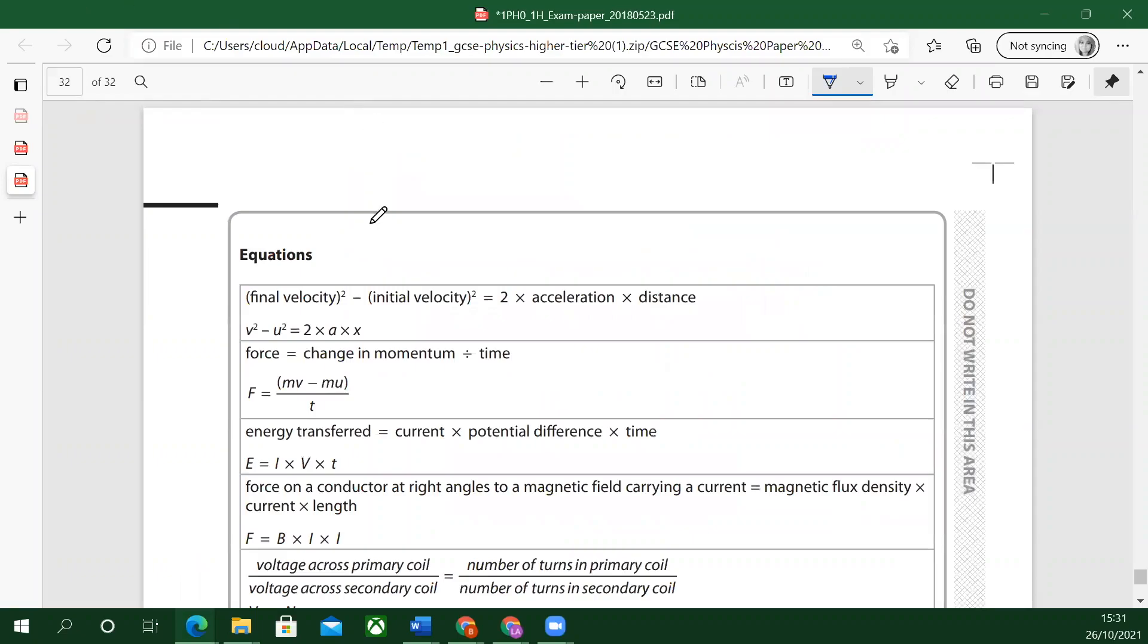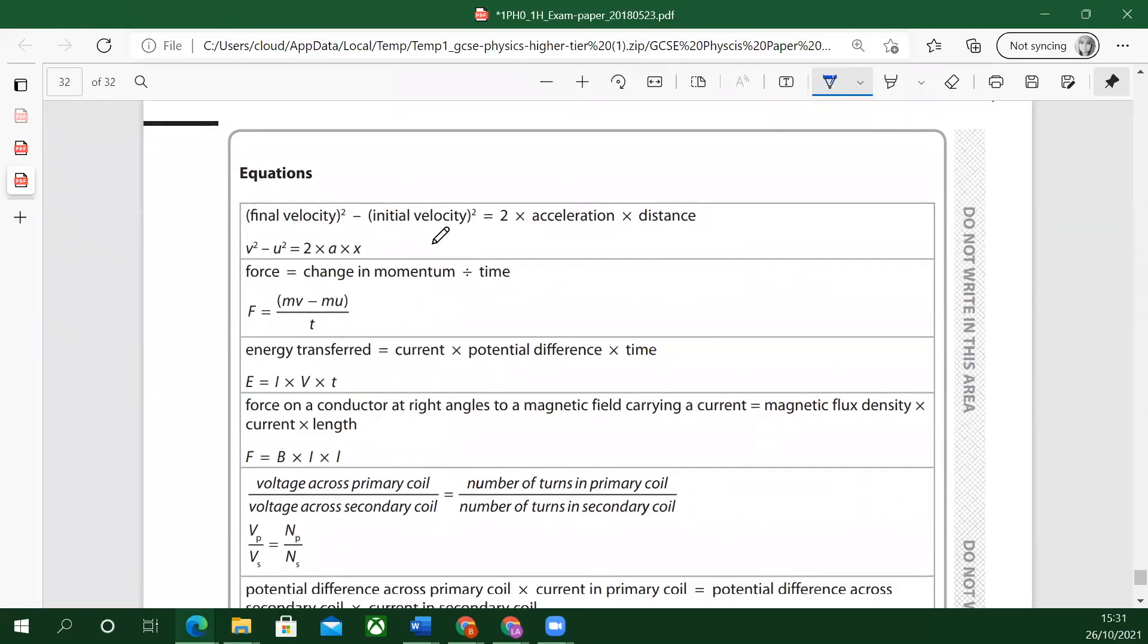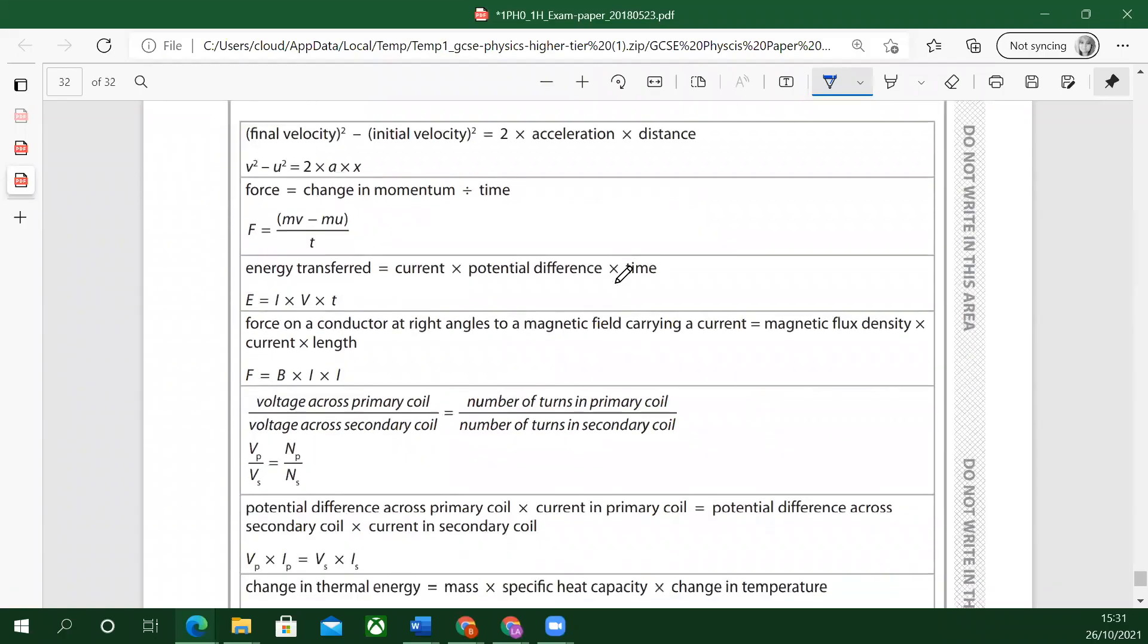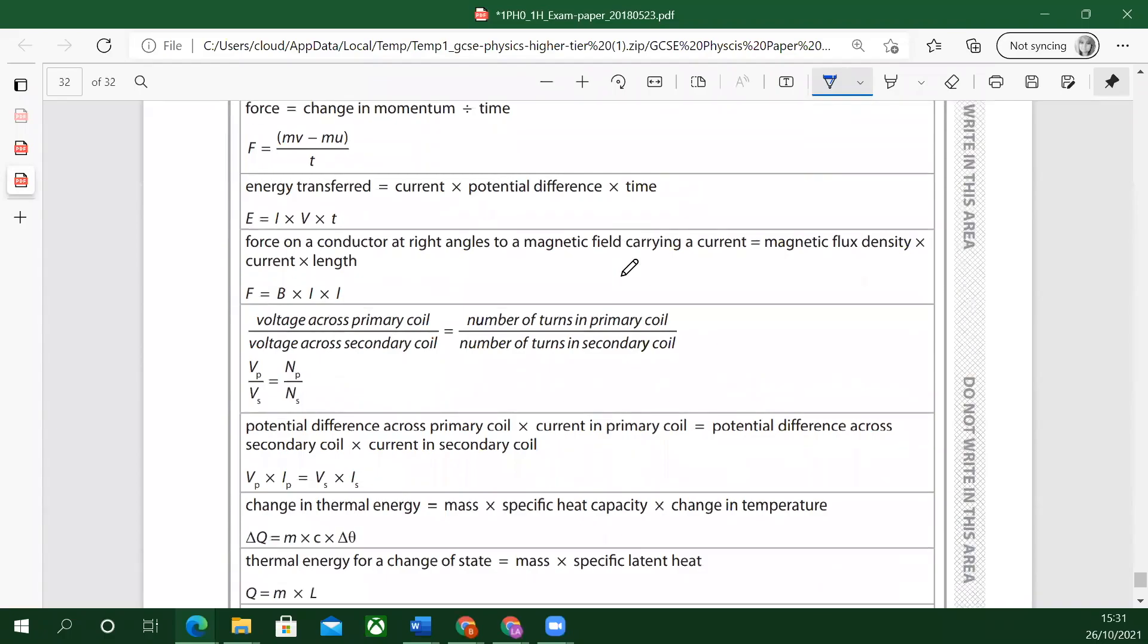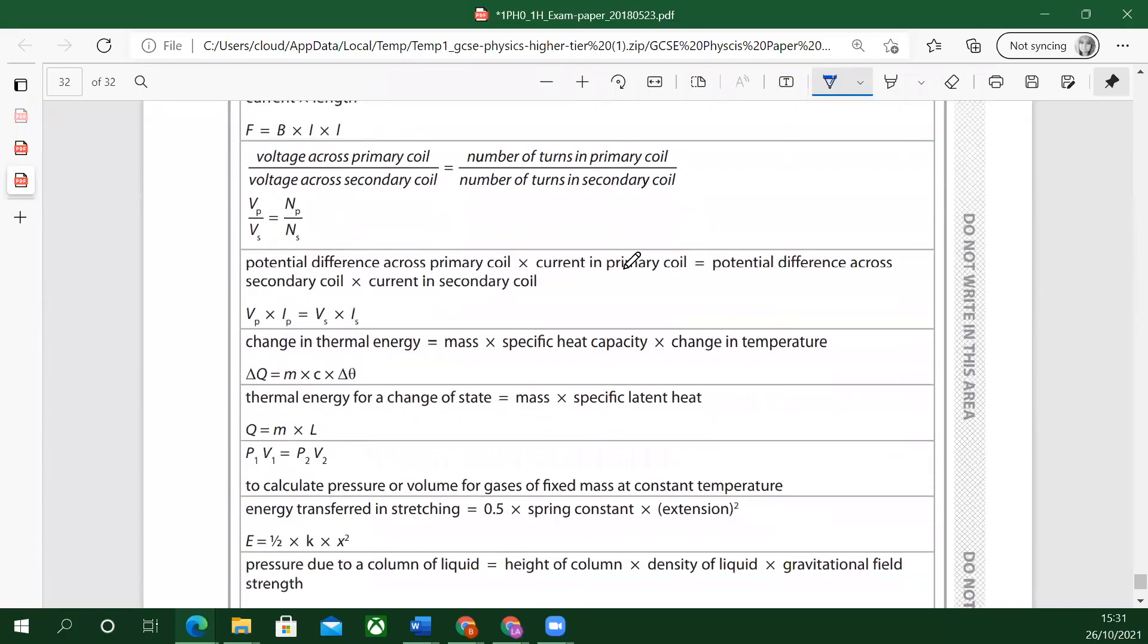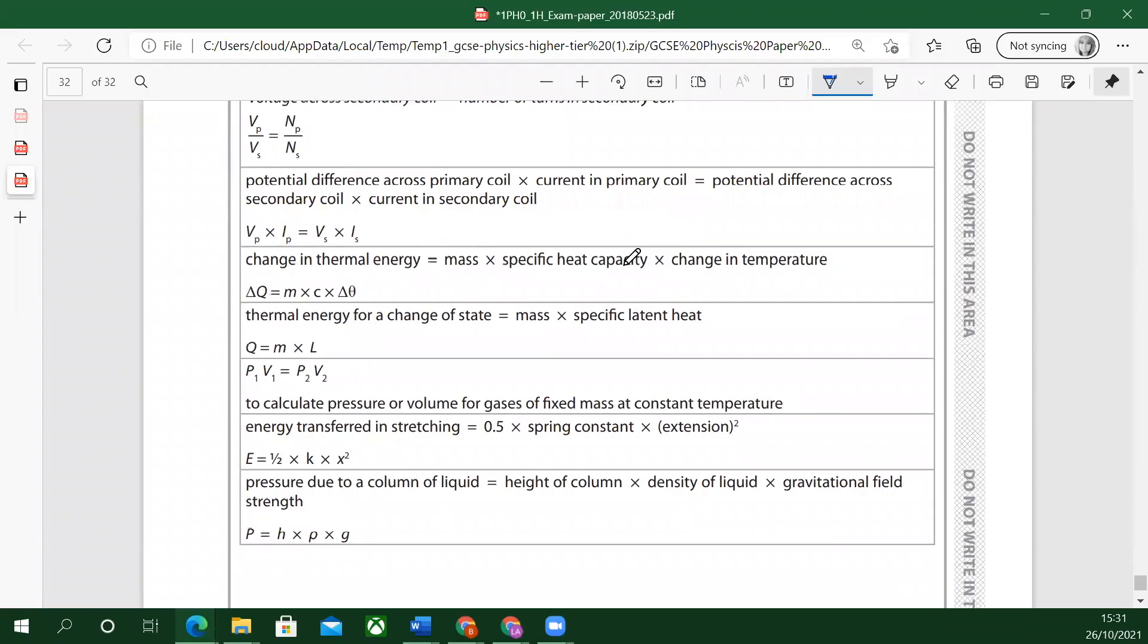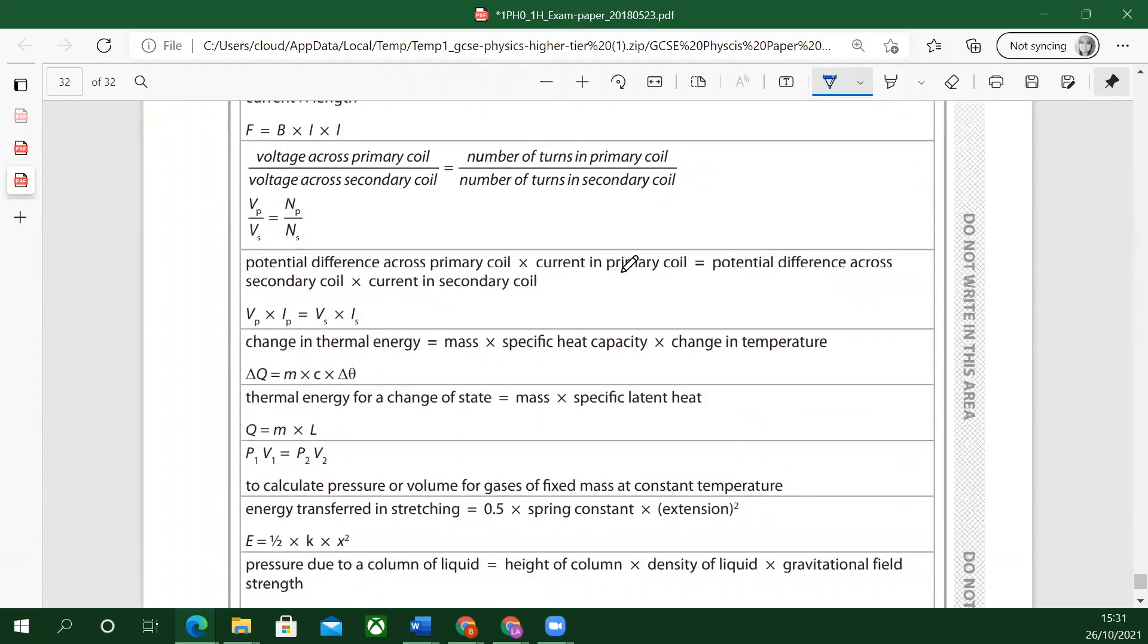Total mark for this paper is 100. The marks for each question are shown in brackets, so use that as a guide as how much time to spend on each question. One mark usually means one statement. In questions marked with an asterisk star symbol, marks will be awarded for your ability to structure your answer logically. At the end of the paper, there's an equation sheet. These equations are given in the exam. Make yourself familiar with these equations and we'll go through them as we get to them in the paper.